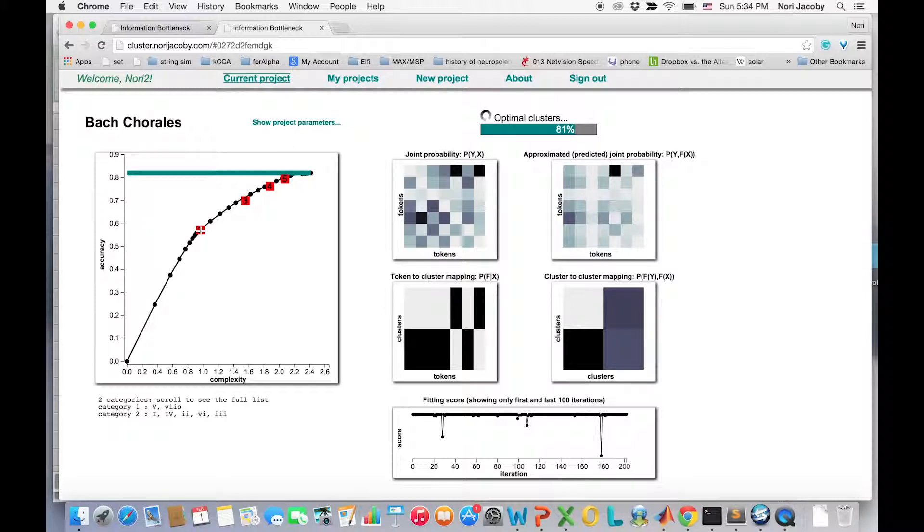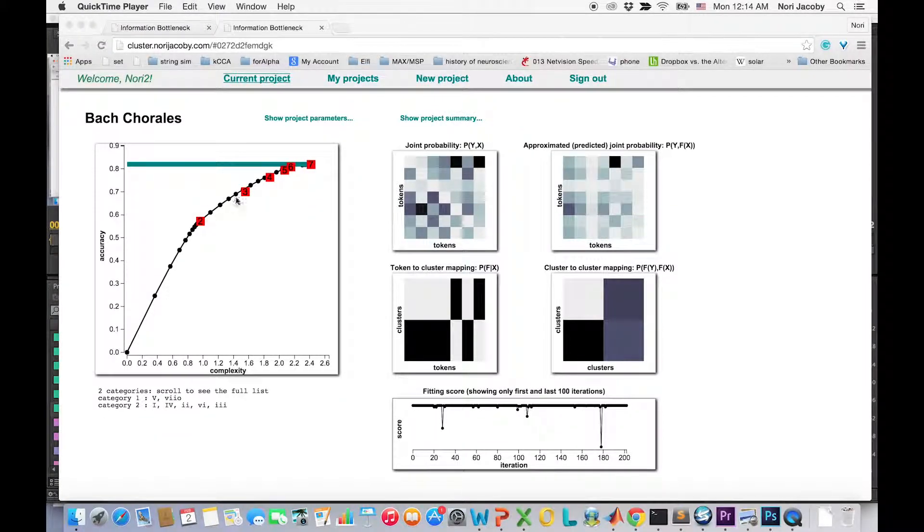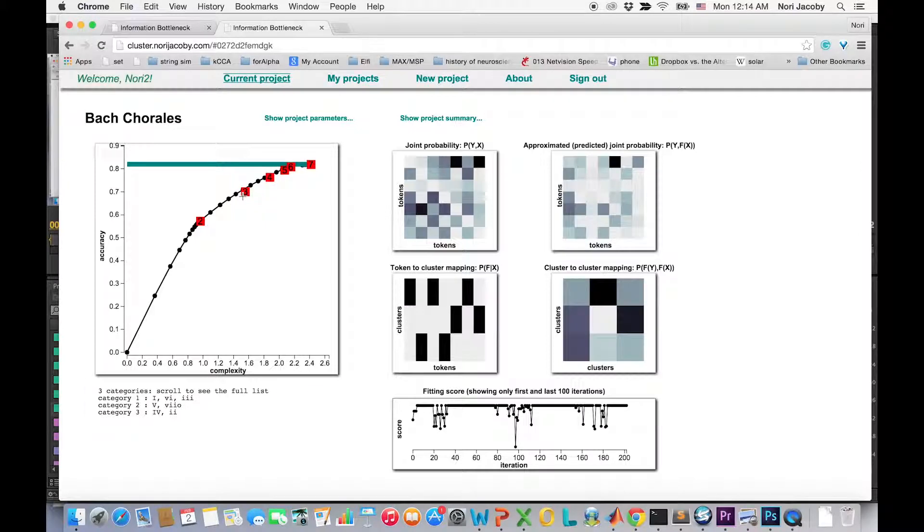We can immediately see some interesting results. The optimal categorization to two clusters is something like dominant chords and non-dominant chords. Even more remarkably, the optimal categorization to three clusters overlaps with the textbook division into tonic, subdominant, and dominant.